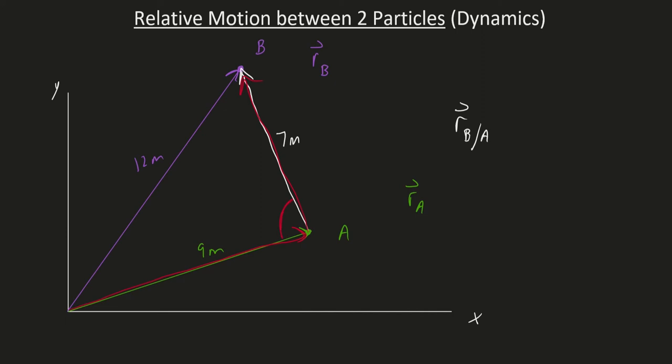So what it looks like I'm doing is I'm taking vector A, this first one, and I'm tip to tail adding that with this relative position vector. And as we can see here, this would be the sum of this tip to tail addition. So equals the position of B measured from the origin.